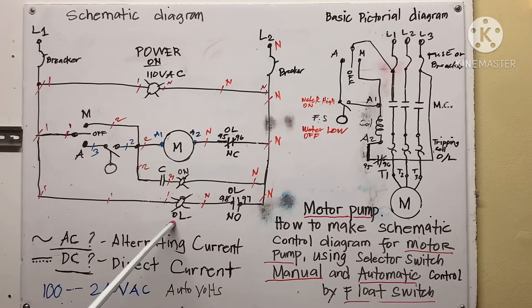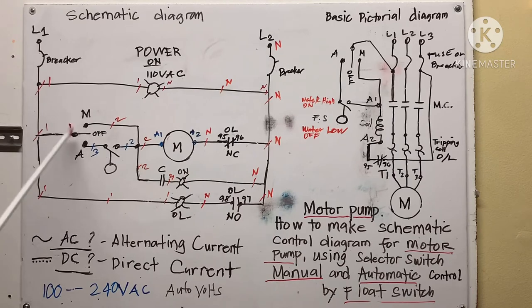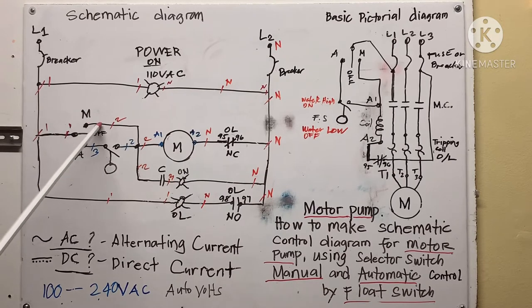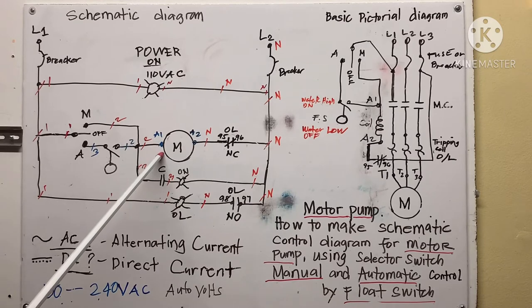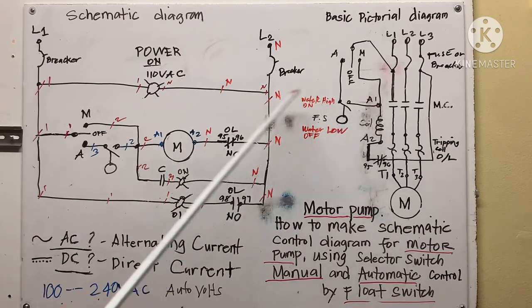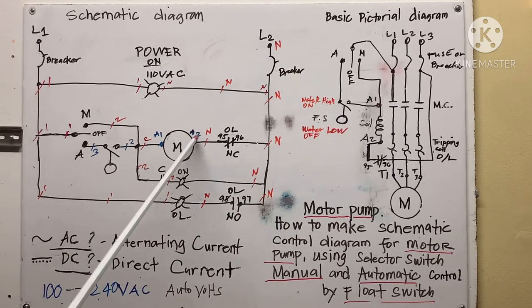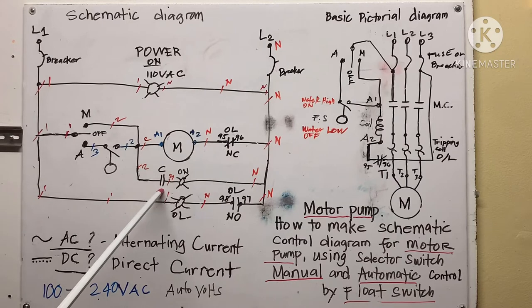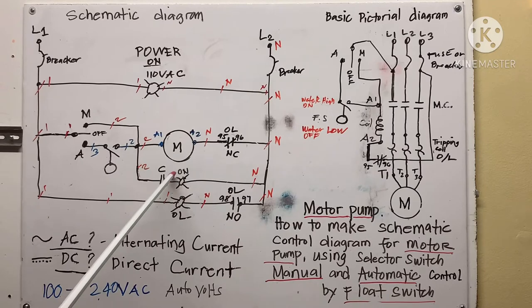This is the selector switch. When you put it in the middle it's off. When you turn to manual, the current goes to A1 — the circuit goes through there, so the motor is energized. The normally open contact for the contactor also energizes the additional indicator light.